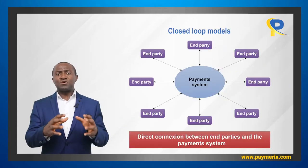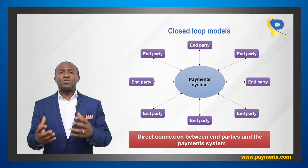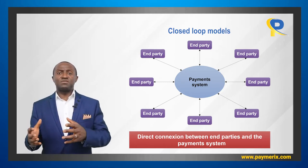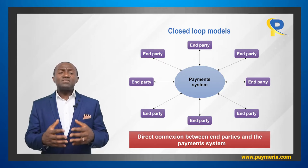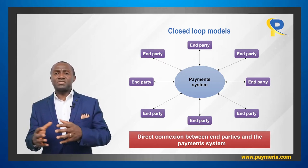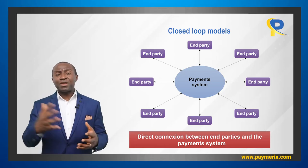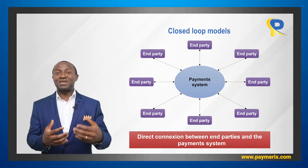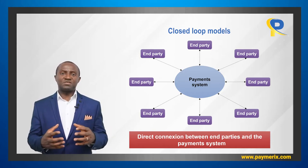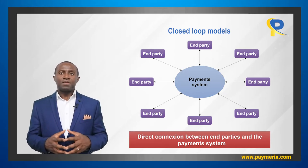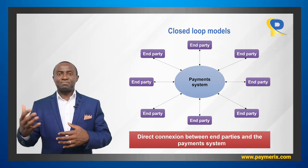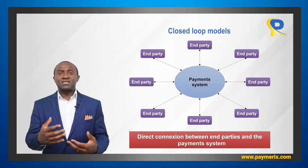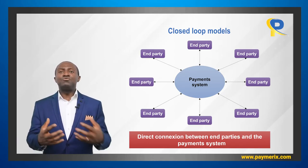Let us consider closed-loop models first. This is what a closed-loop model looks like. This system is directly connected to end parties — the senders and receivers of funds. As we can see, there is no intermediary between the end users and the payment system. End parties establish a direct connection to the payment system, and it is not possible to join the payment system as an intermediary. This is the major difference between open and closed-loop systems.